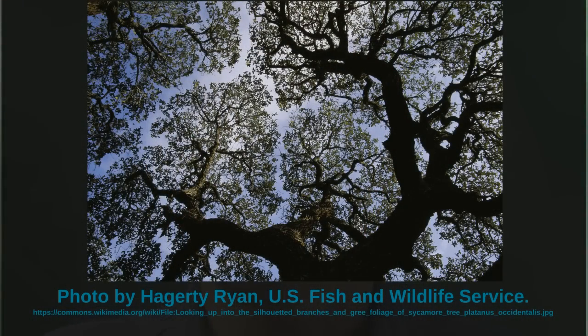Another example of a fractal is a tree. This picture is of a sycamore tree, and you can see this branching structure — kind of like the fern — is repeated at several scales. Branches have smaller branches off of them that are similar to the main branch, and those small branches have smaller branches still, and so on. The same, or similar, shape repeats over many different scales.